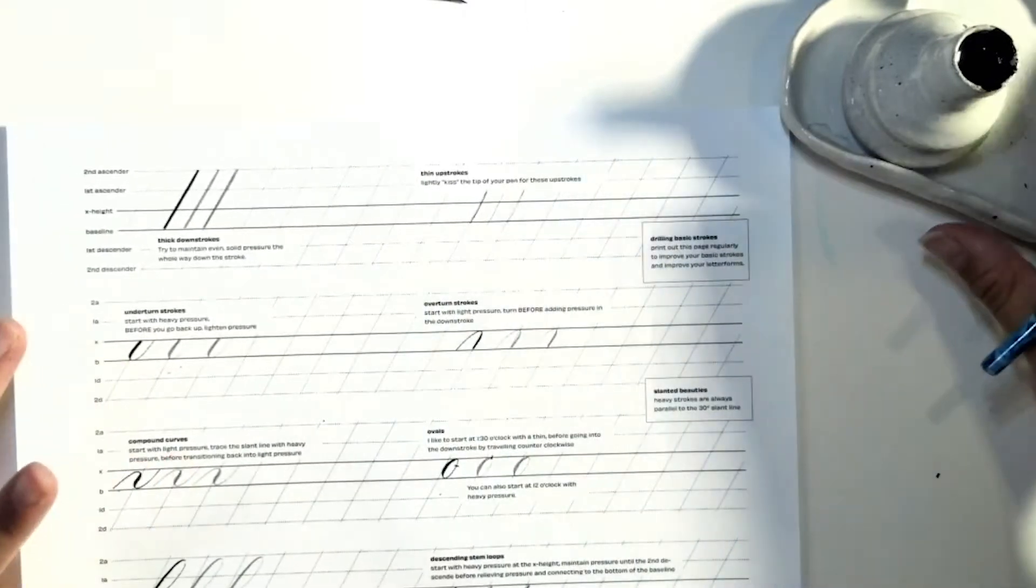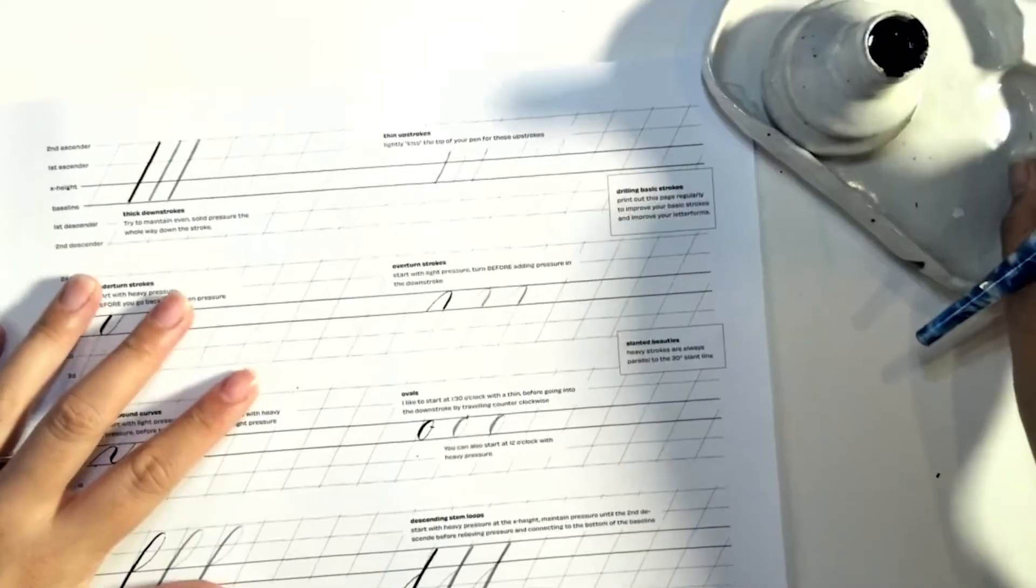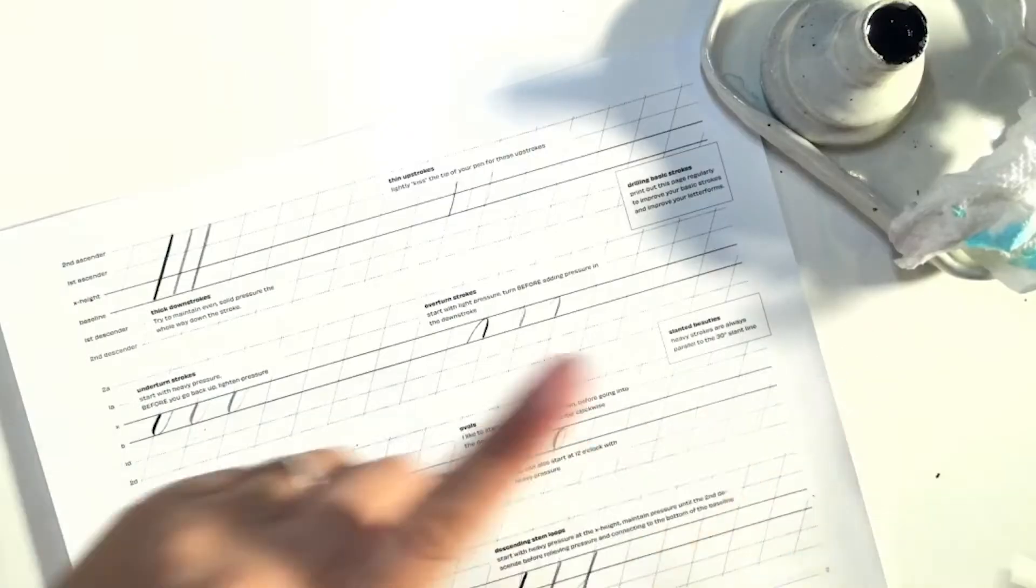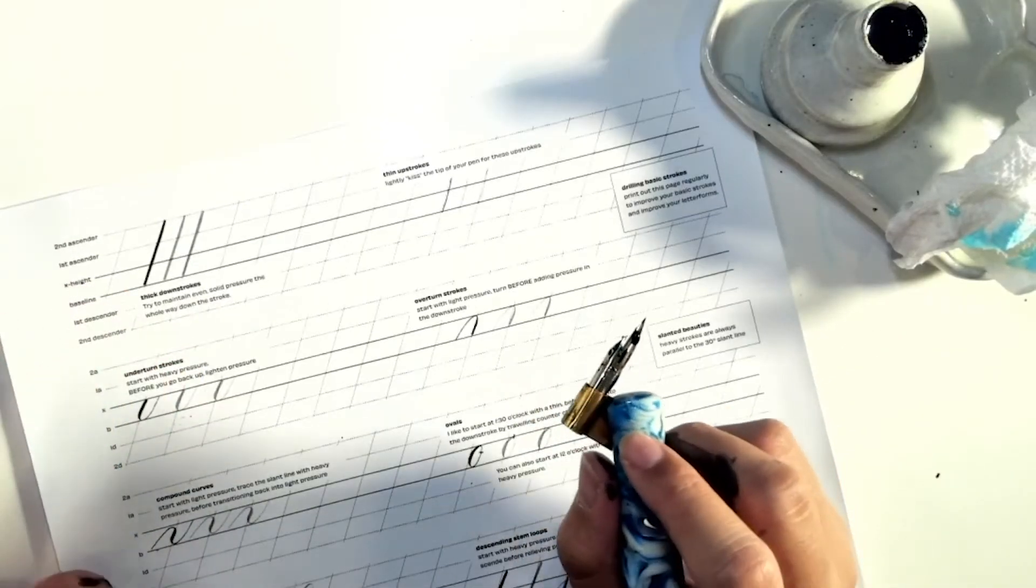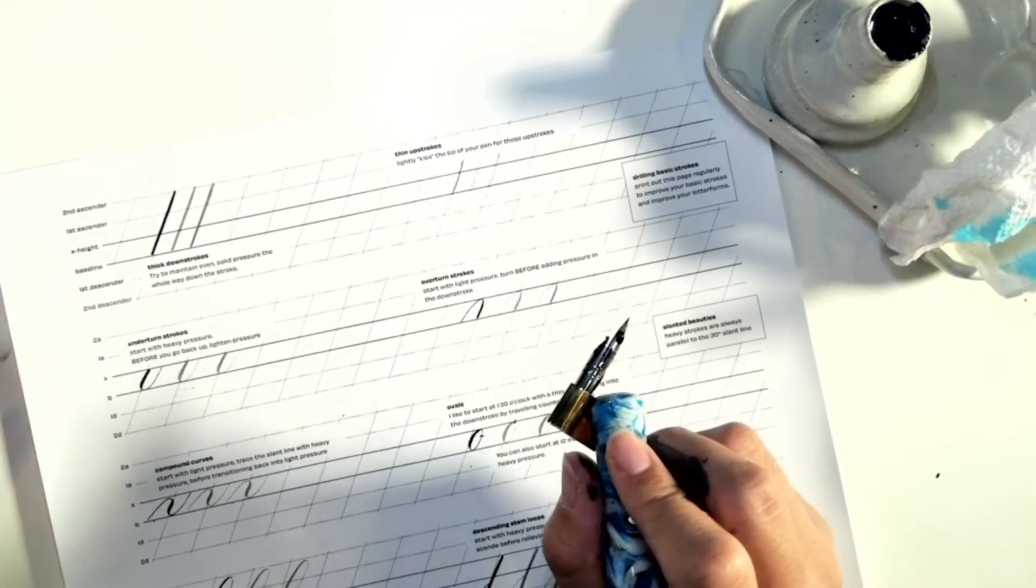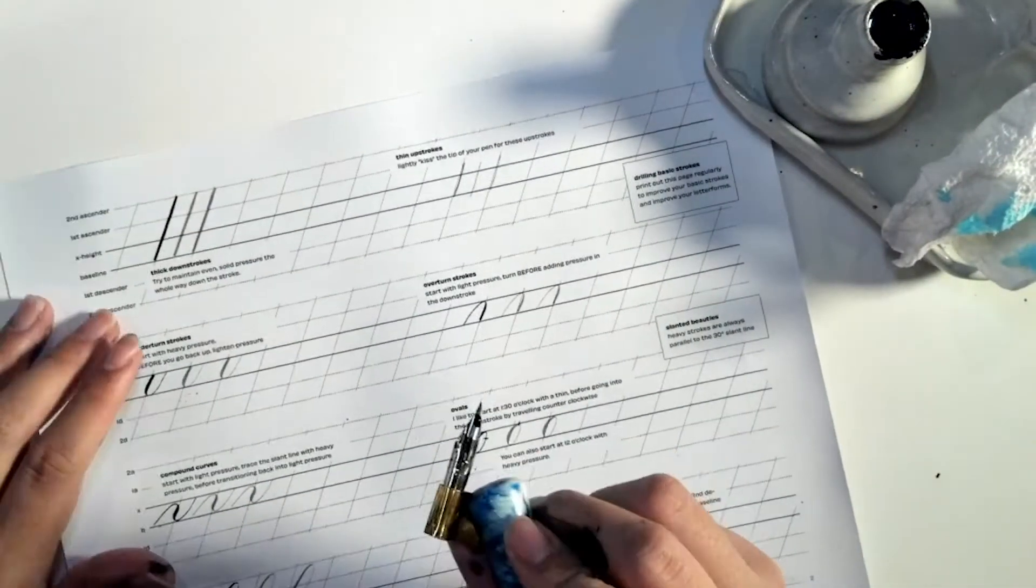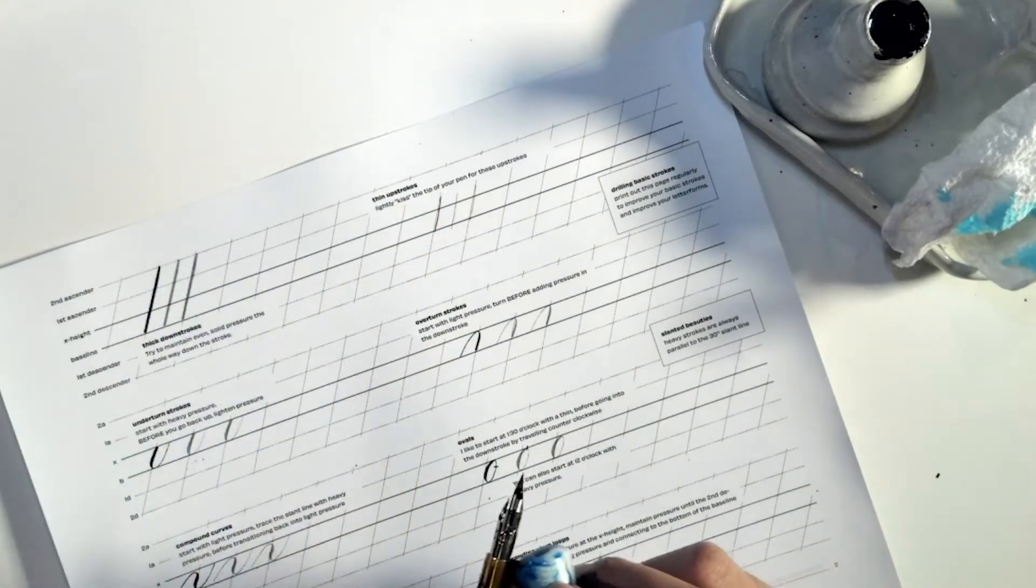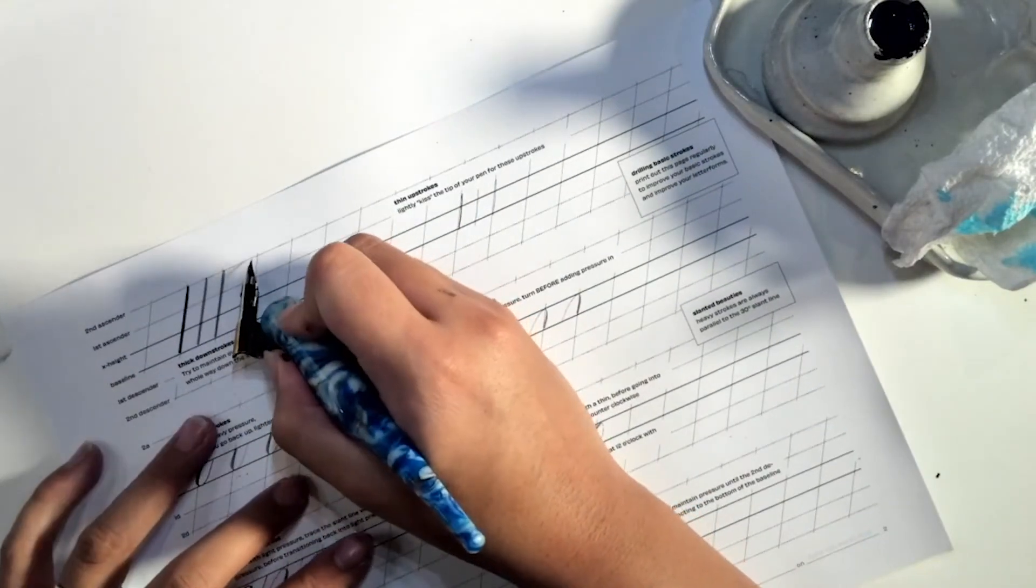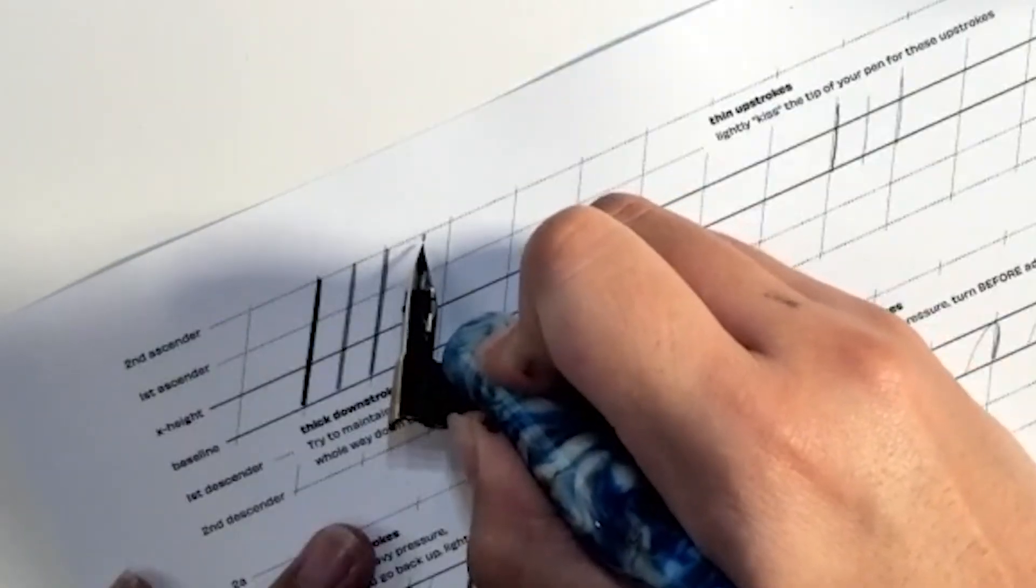Alright, so I got all my equipment set up. I have my pen. But for the second page, this is where you're going to start your basic strokes. This is where you're going to be acquainted with your pen. Alright, so to use this worksheet, I have a couple tips for you that you can take a look at while you're doing it. But basically, you're just going to start off with a bunch of thick strokes.